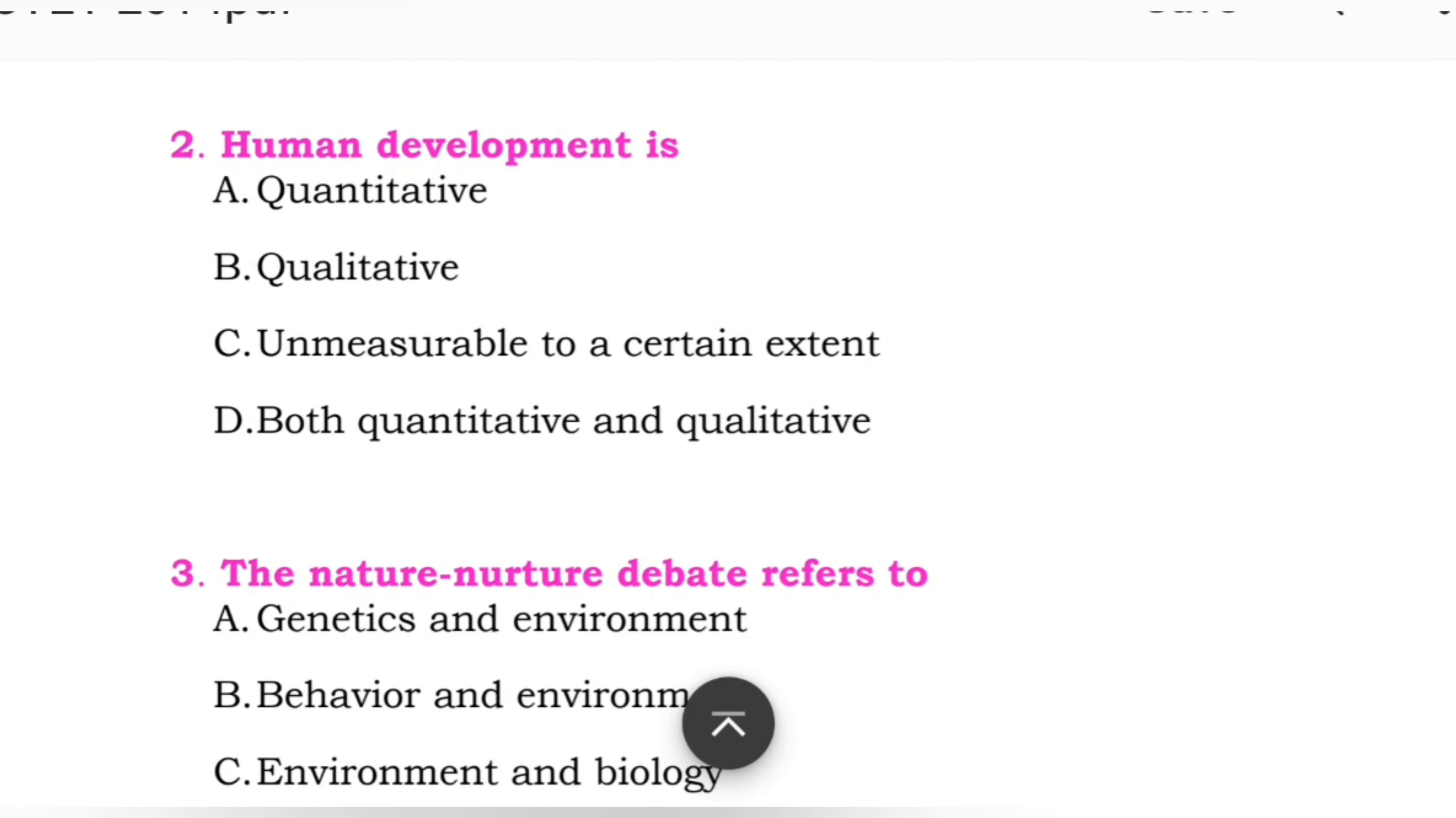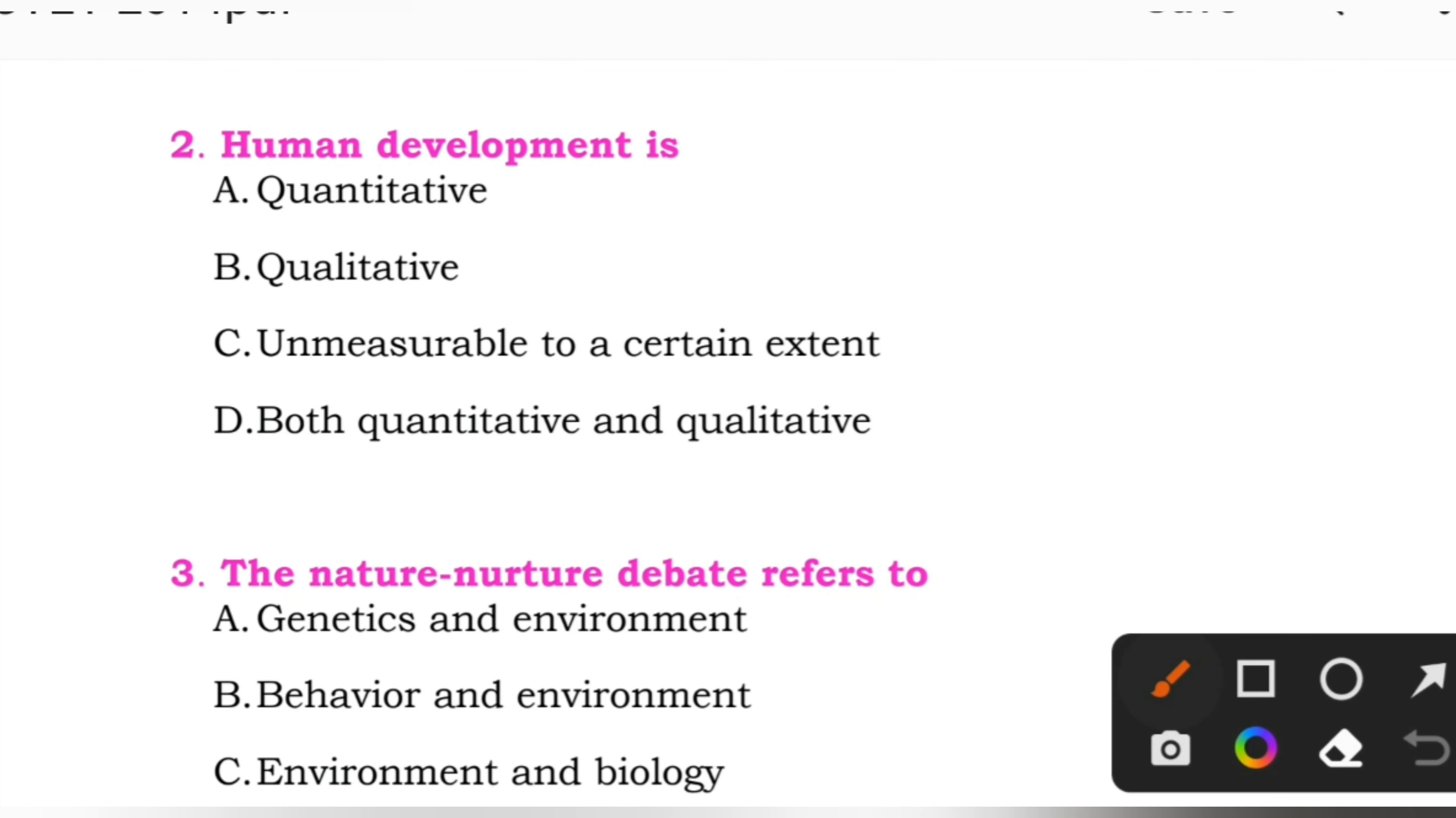The second question is: human development is. A: quantitative. B: qualitative. C: unmeasurable to a certain extent. D: both quantitative and qualitative. Here, the right answer is D, both quantitative and qualitative.